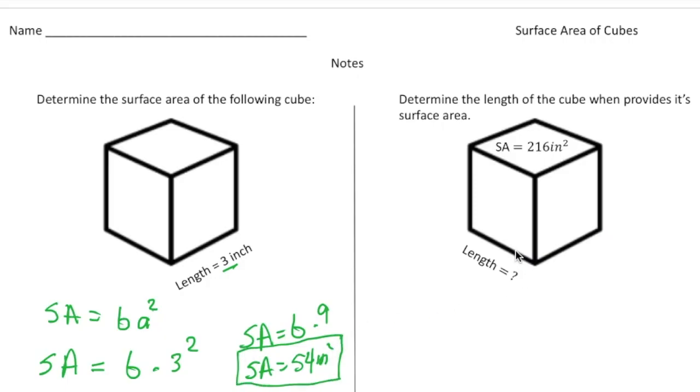Now for this problem over here, notice it says determine the length of the cube when provided its surface area. So to do this, all you do is use actually the same exact formula. So surface area equals six a squared. Now this time I'm going to plug in 216 in for the surface area. So it's going to be 216 equals six a squared.